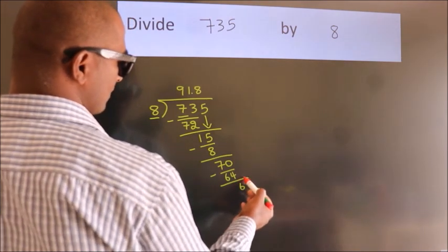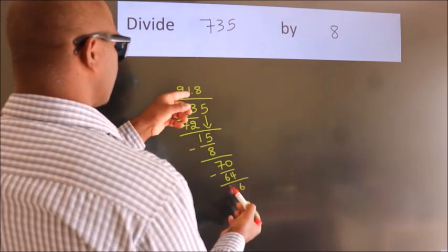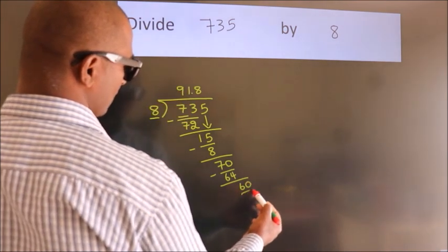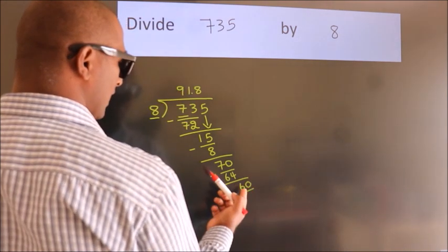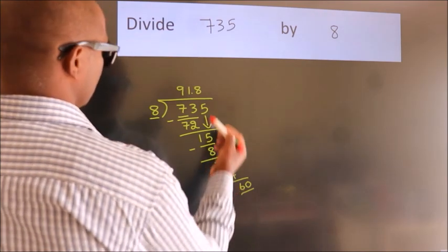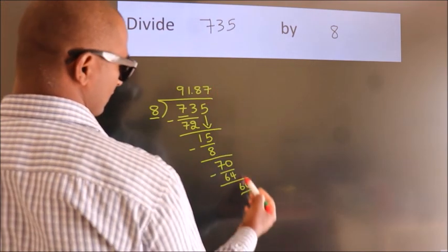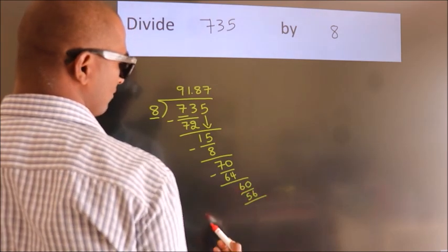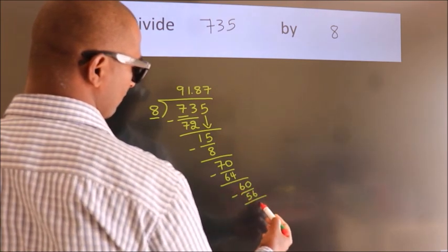After this, we already have the decimal. So directly take 0. So 60. A number close to 60 in 8 table is 8 sevens 56. Now we subtract, we get 4.